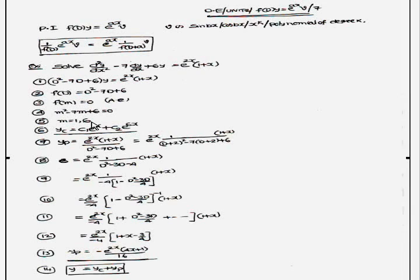If you solve m = 1, 6, therefore complementary function = c₁e^x + c₂e^(6x).